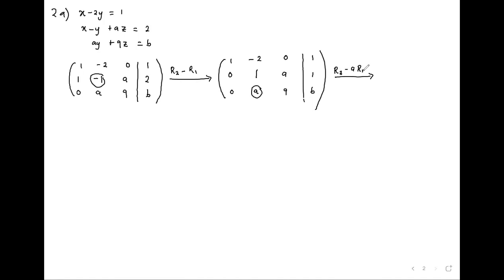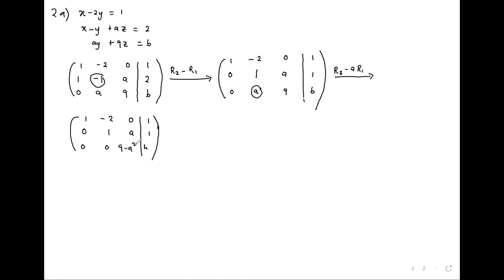When we do that, we get: 1, -2, 0, 1; then 0, 1, A, 1; then 0, 0, 9 minus A squared, B minus A. Because we're multiplying row two by A, we get nine minus A squared in that position.